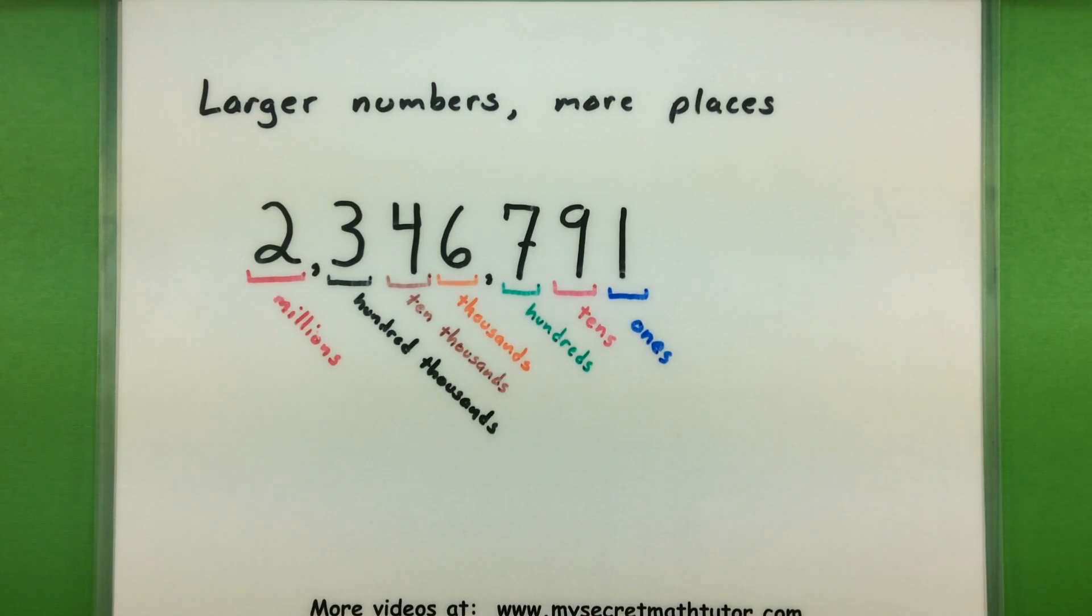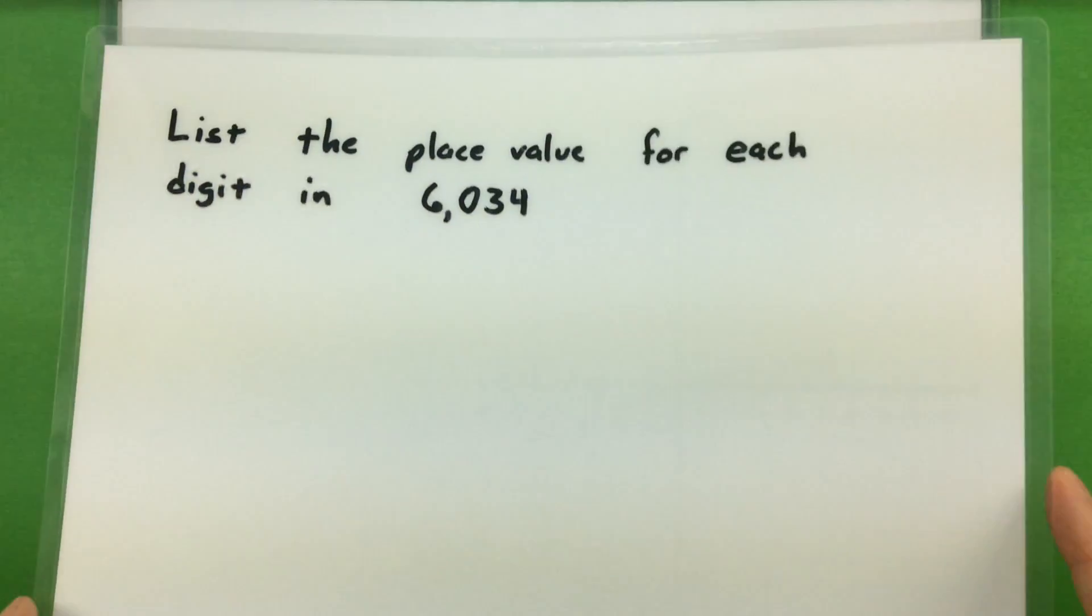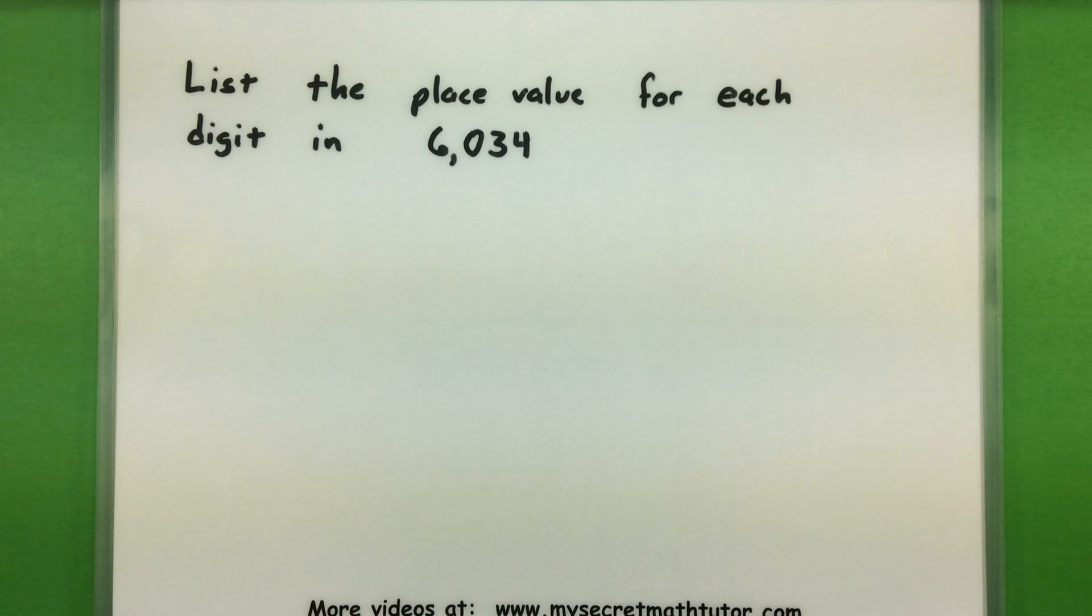Let's do a couple of examples so you get a better sense of how this works. In this first example, we just want to list the place value for each digit in the number 6034.